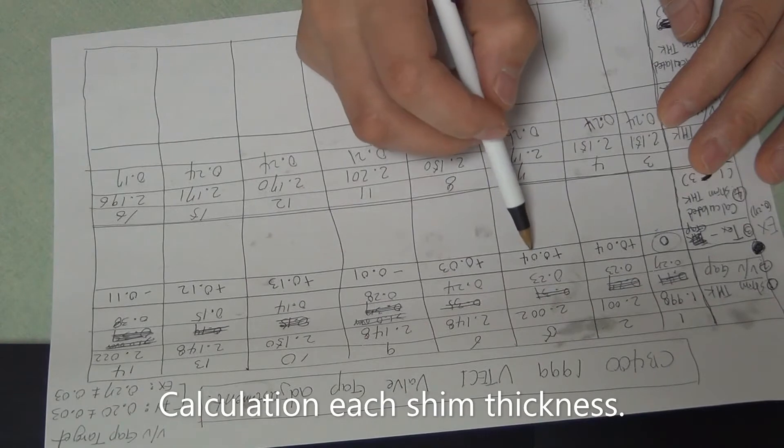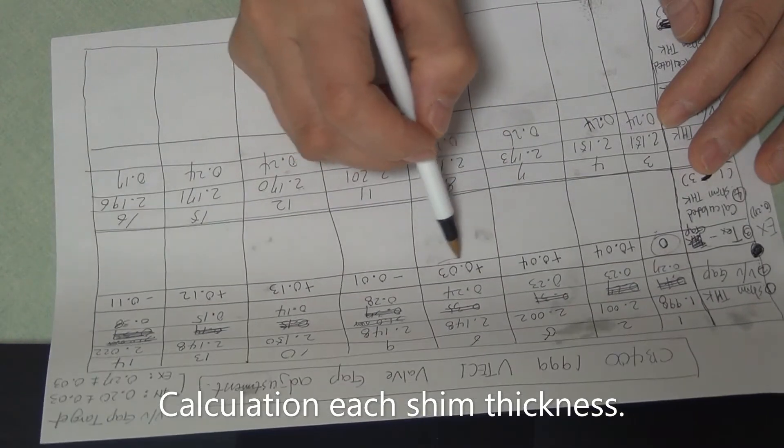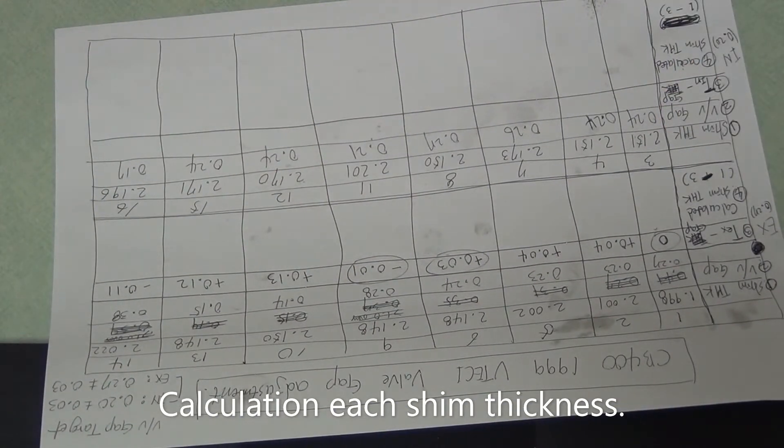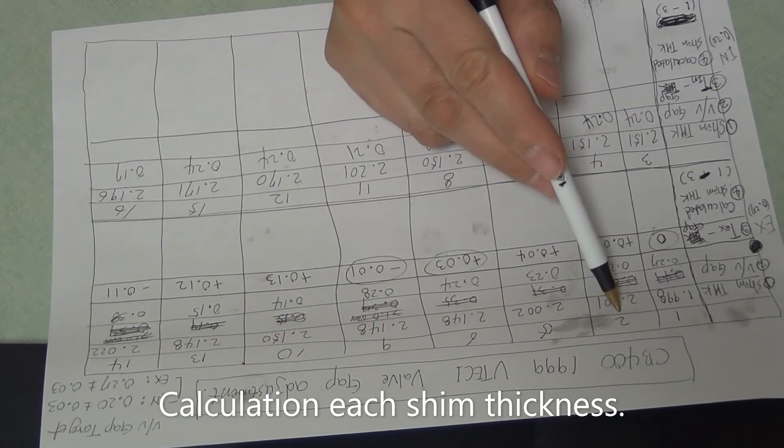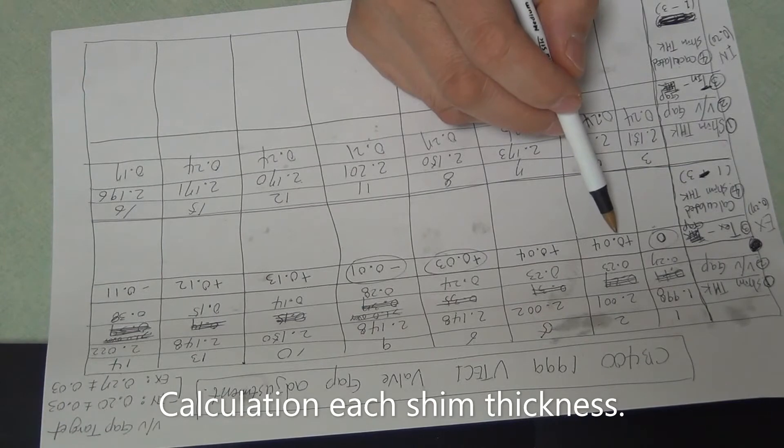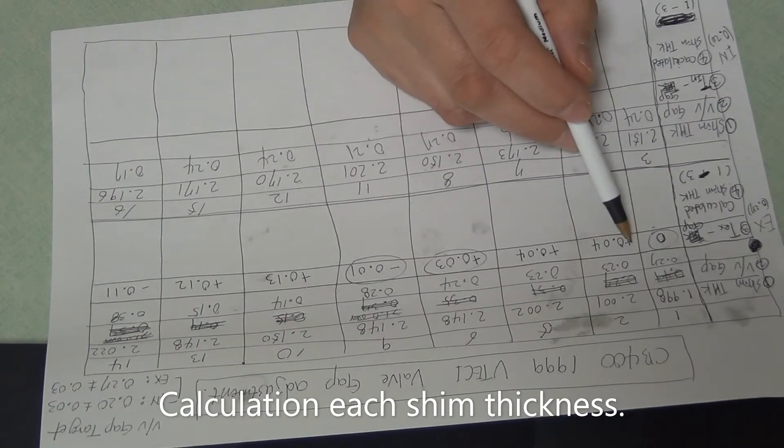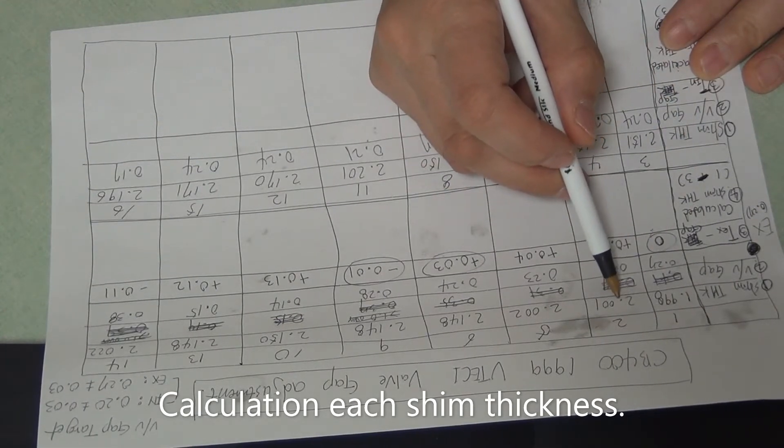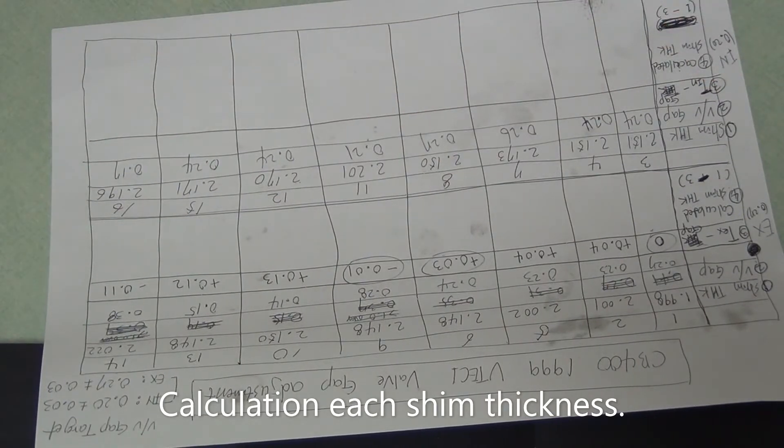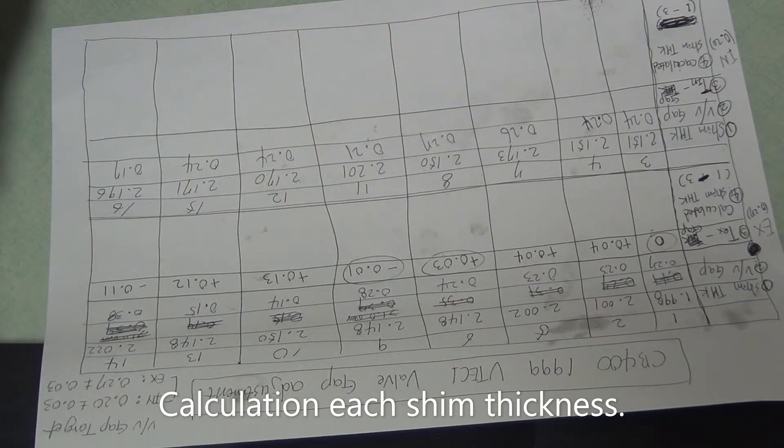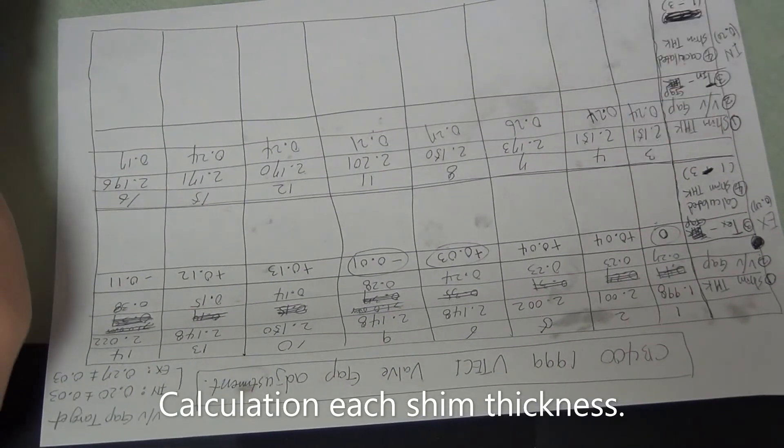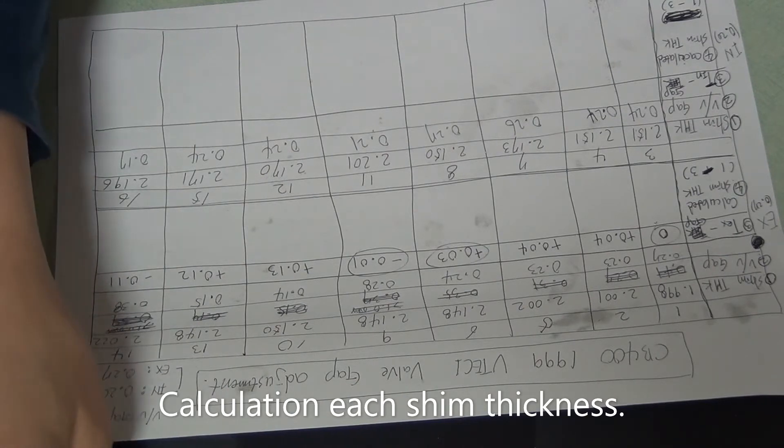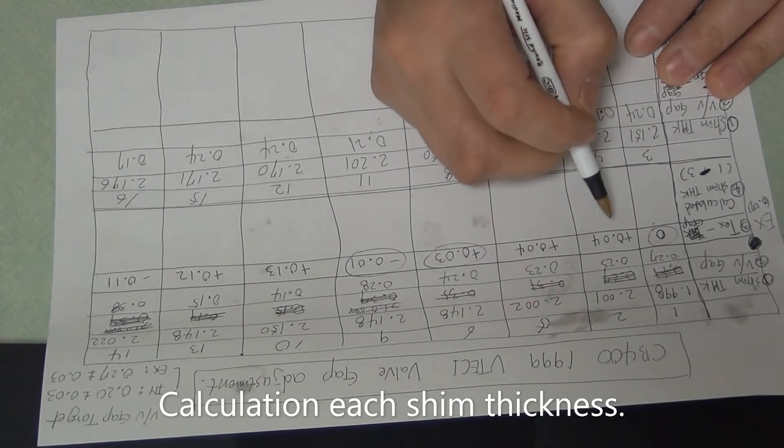There is no need to change. So 1, 6, 9, no need to change. And let me see number 2, the difference is 0.04 plus. So valve shim thickness is 2.001, 2.001 minus calculated value 0.04.